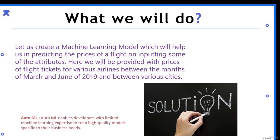These attributes can include the name of the airline, the class of the journey, the time of the journey, different source, destination, and many other attributes. We will be using a dataset in which various airline prices between the months of March and June of 2019 are provided between various cities. We will use this dataset to feed our machine learning model and then our automated machine learning model.